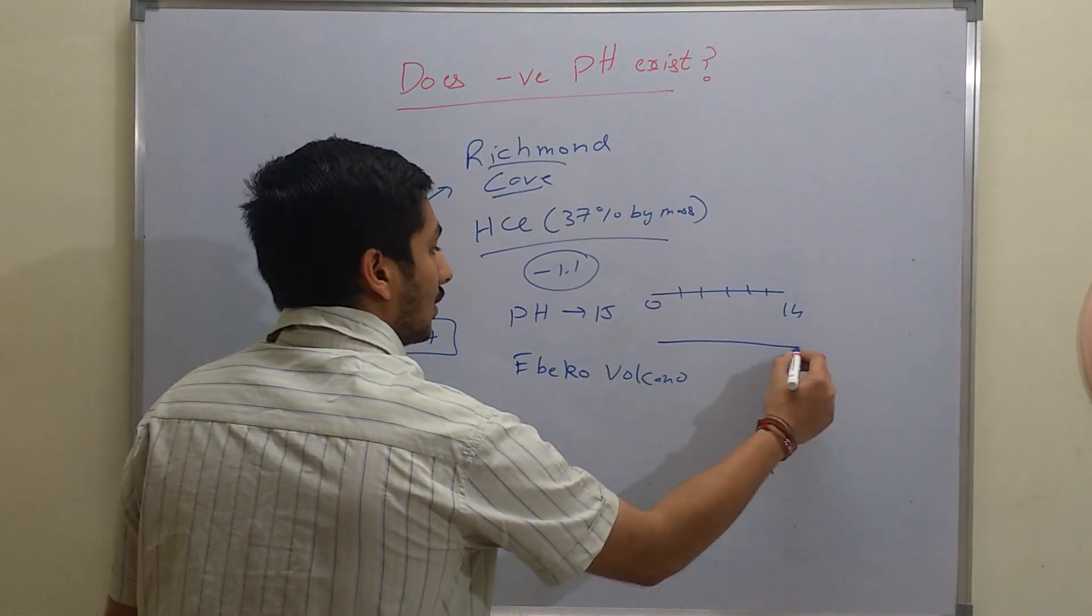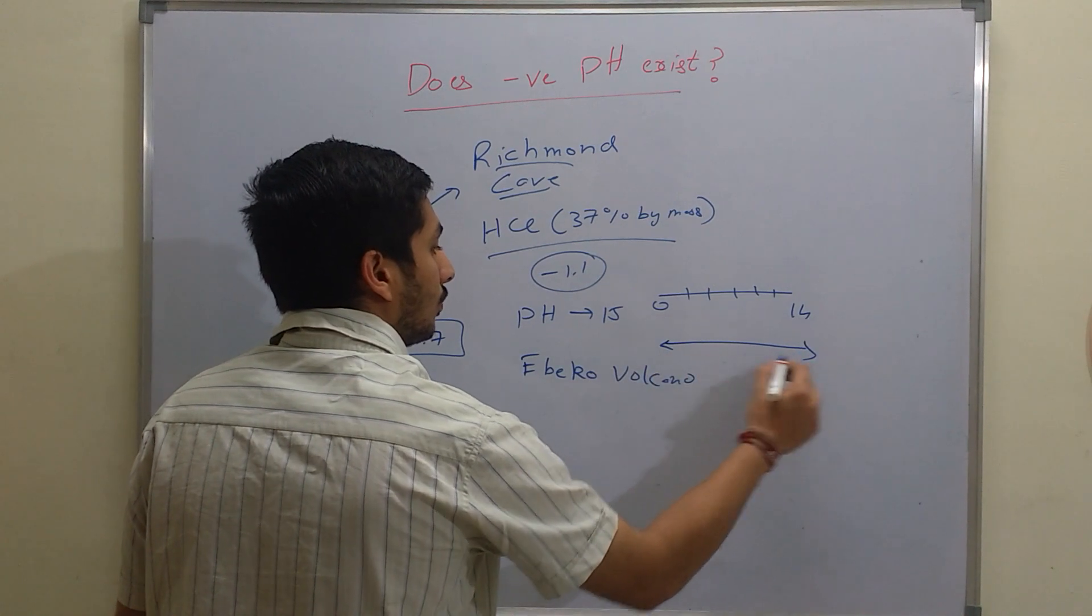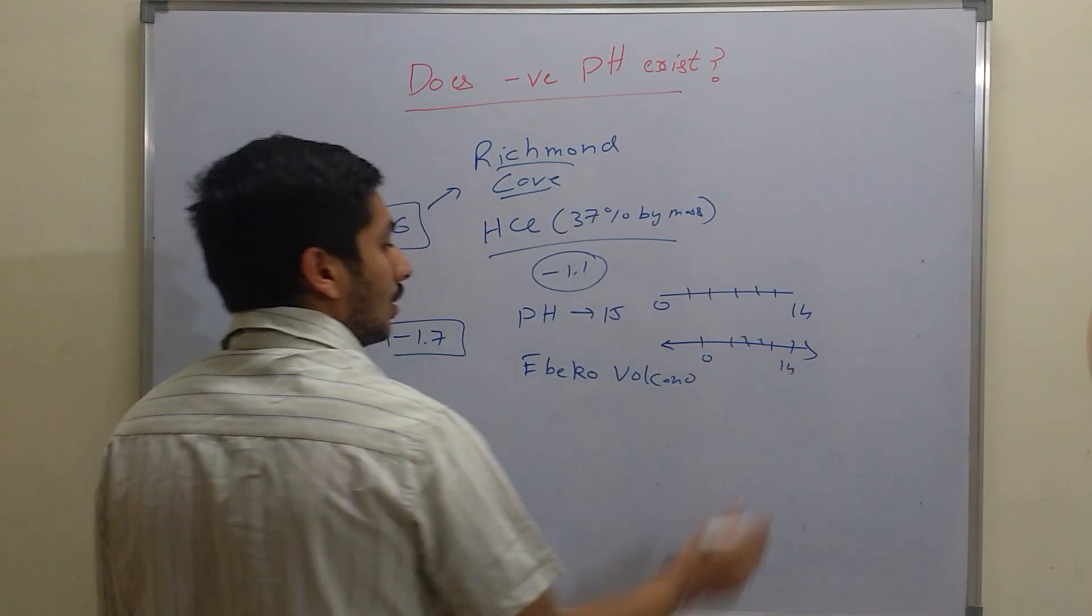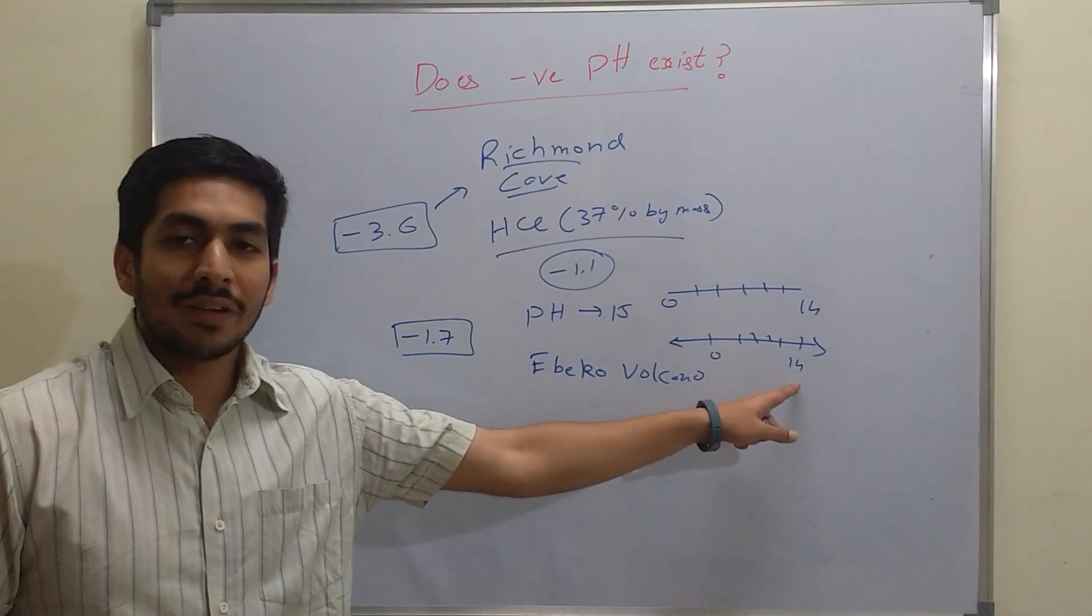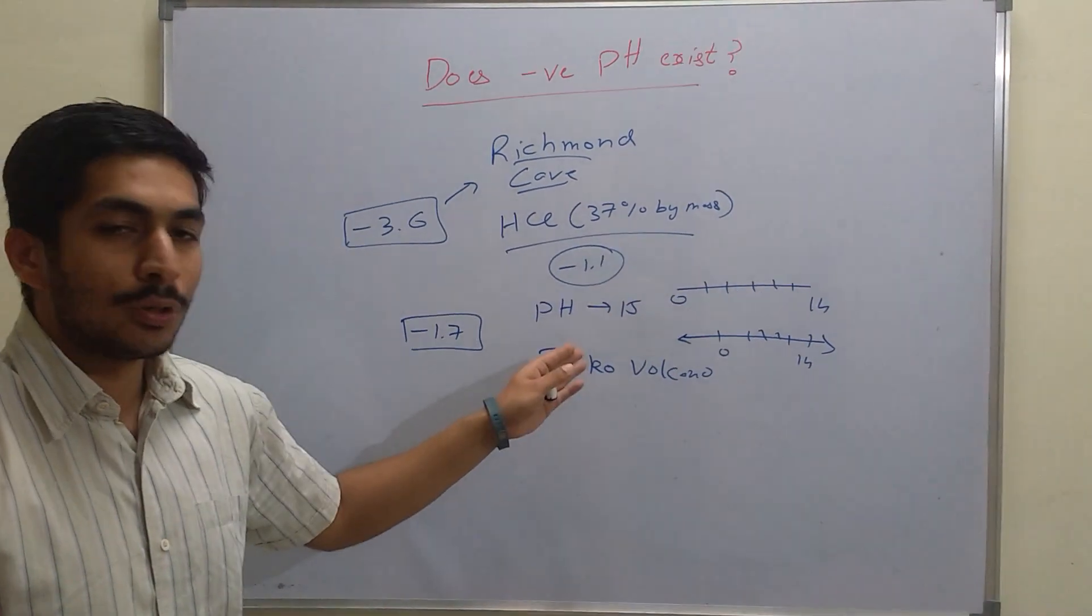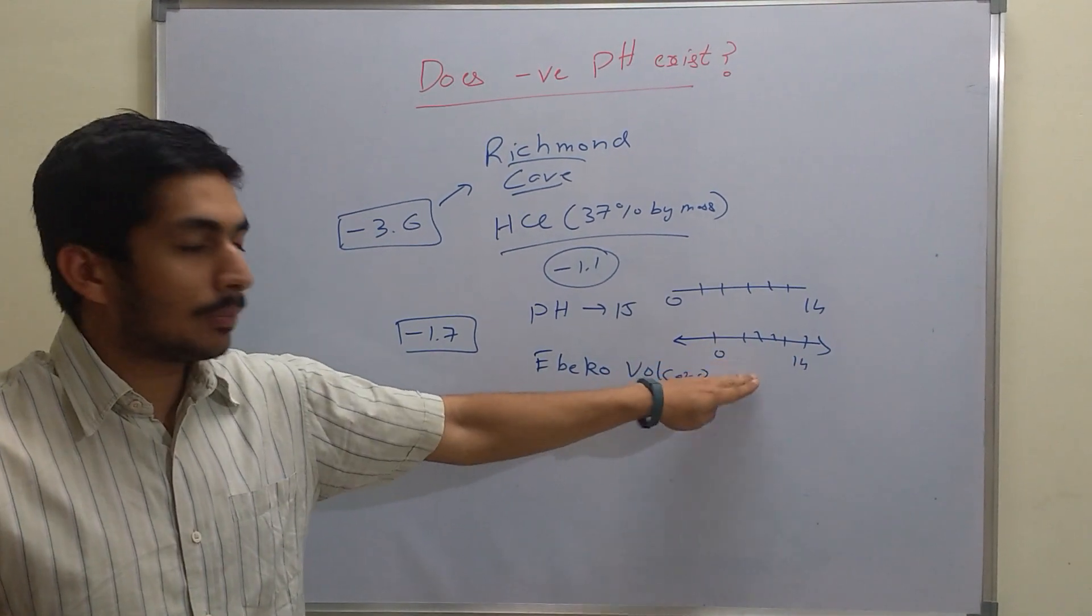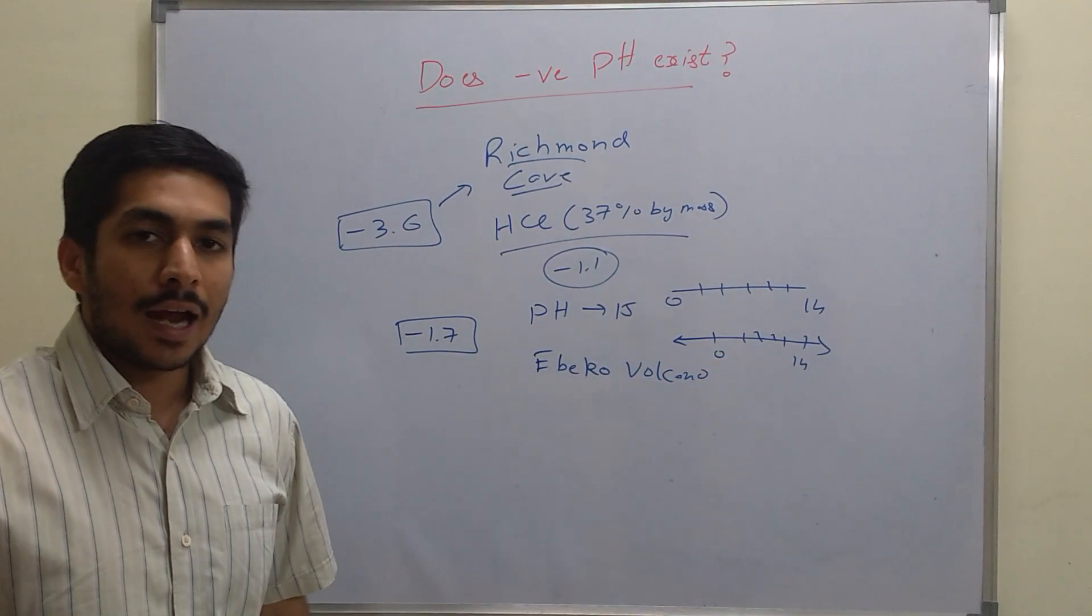The correct way to depict the pH scale is in open-ended form. You can show 0 here, 14 here, and then like this. That means 0 to 14 is very common, but it can also exist below 0 and beyond 14.